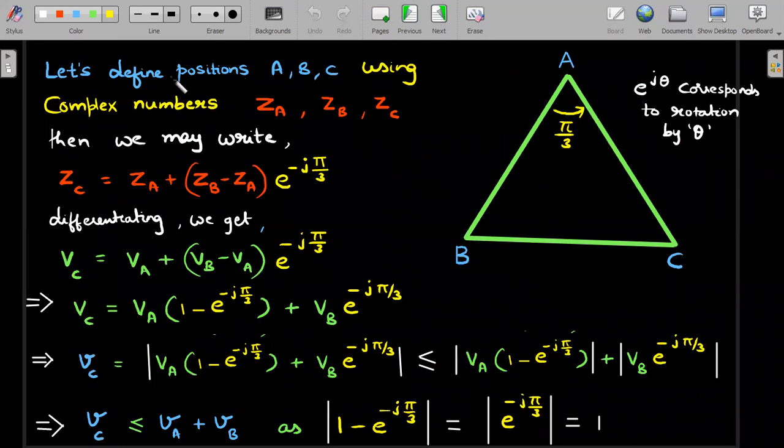Then we may write the value of the complex number zC in the Argand plane as zA plus (zB minus zA), which is nothing but this vector form rotated by an angle of π/3. I hope you understand this part. e^(-jπ/3) is nothing but a rotation factor in a clockwise sense - if this is plus it's an anti-clockwise rotation.